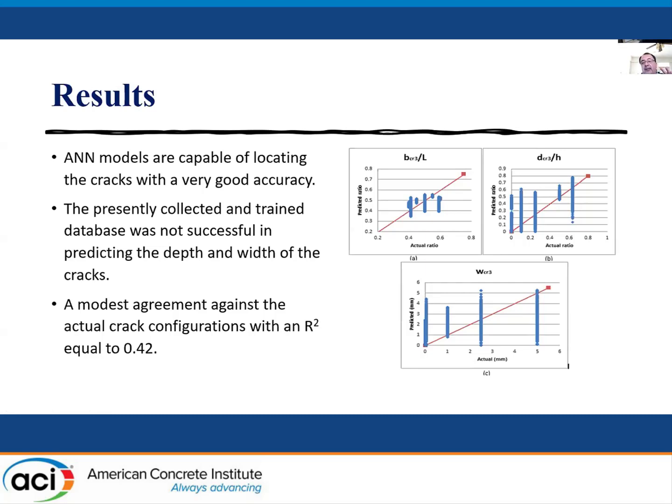Or in other words, we have a certain set of stiffness ratios that may end up having the same depth to height ratio versus width of the crack and location of the crack as well. But the good news is that even though the R squared is 42% for the overall, considering all the variables.